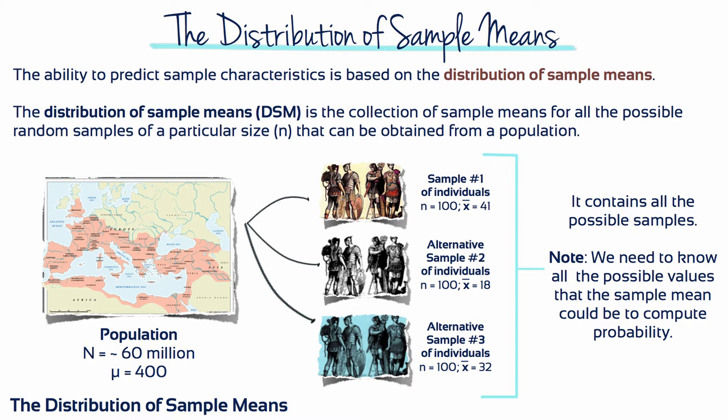Fortunately, however, the huge set of possible samples forms a relatively simple and orderly pattern that makes it possible to predict the characteristics of a sample with some accuracy. The ability to predict sample characteristics is based on the distribution of sample means. The distribution of sample means is the collection of sample means for all the possible random samples of a particular size that can be obtained from a population.